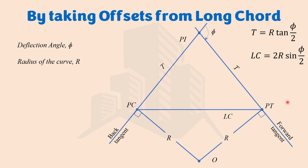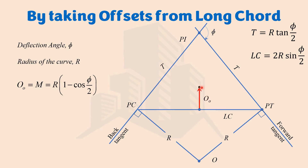Once the long chord is marked, we take offsets from it. We move to the mid-point of the long chord by dividing the total distance by two. The curve is to be marked on one side, so we take an offset from the mid of the long chord. The offset at exactly the mid of the long chord is the mid ordinate (O₀). Once we calculate the mid ordinate using its formula, we can mark the mid-point on the curve.